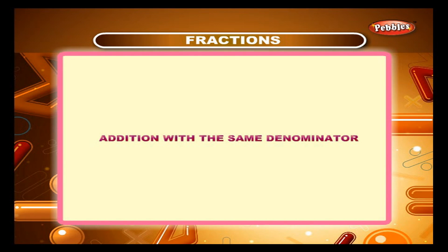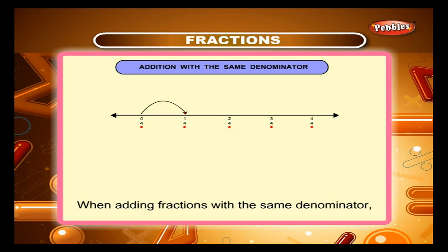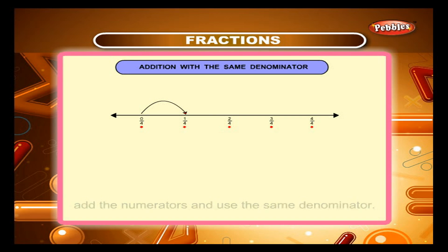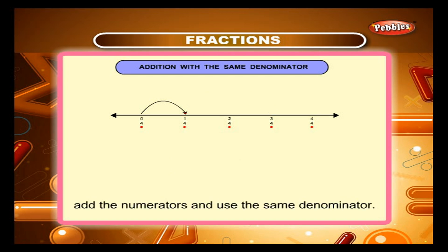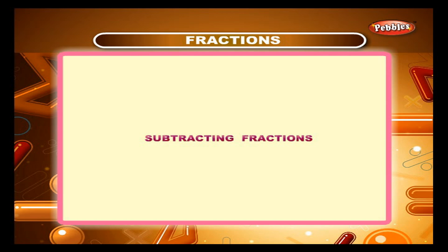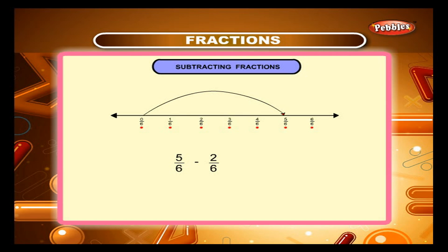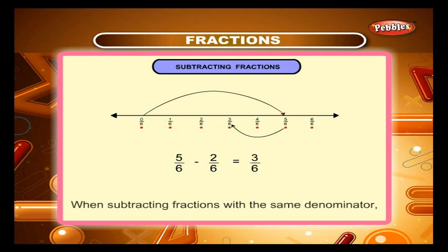Addition with the same denominator: When adding fractions with the same denominator, add the numerators and use the same denominator. For example, 1/4 + 2/4 = 3/4. Subtracting fractions: When subtracting fractions with the same denominator, subtract the numerators and use the same denominator. For example, 5/6 − 2/6 = 3/6.